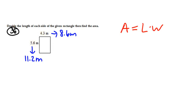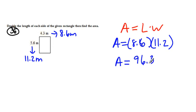And now we are just plugging it in. Area equals length times width, 8.6 times 11.2. Plug this into our calculator, let it multiply it. We get 96.32.